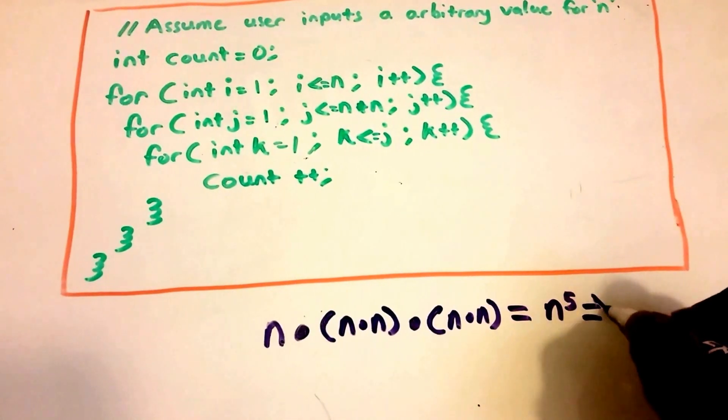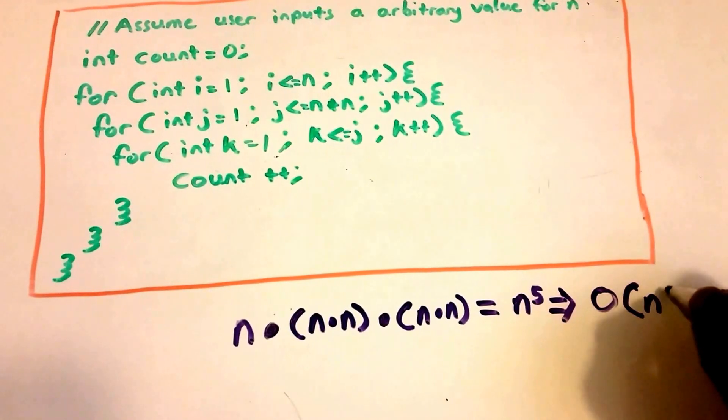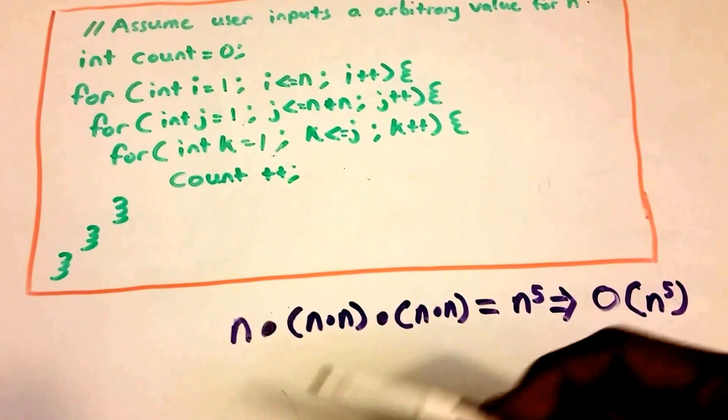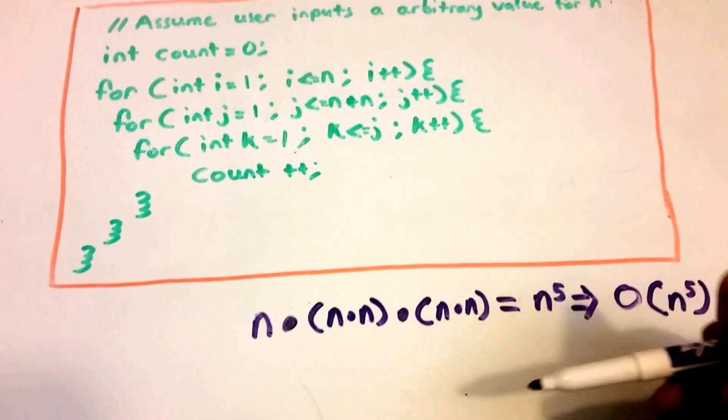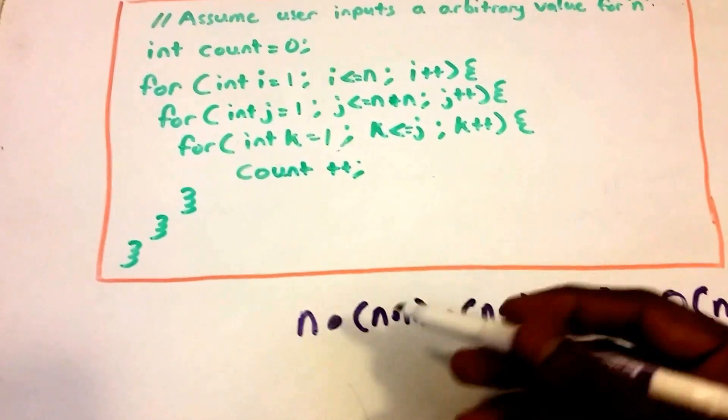And so what is this? This is n to the fifth. And of course this implies that our code is Big O of n to the fifth power. Okay, so now let's actually do some math behind this besides just looking at the code and coming up with this rationale.